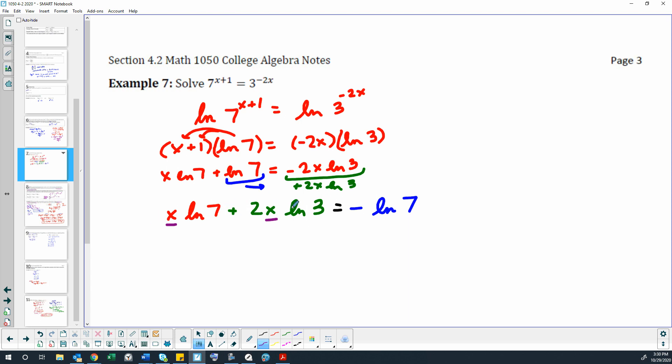Because this is a term, x times the natural log of 7, and this is a term, 2 times x times the natural log of 3. We're going to take those x's out of those terms by factoring them out. So x times (natural log 7 plus 2 natural log 3).